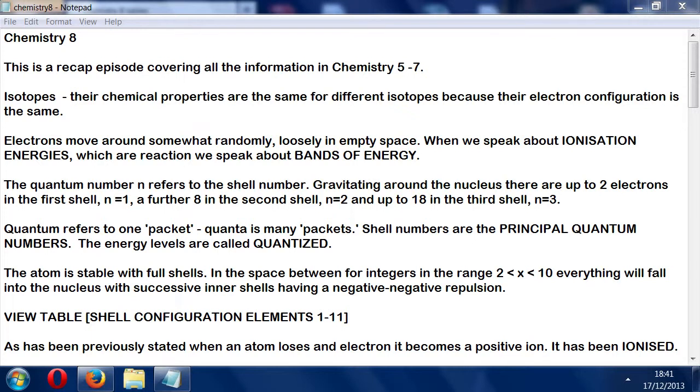I began Episode 5 talking about isotopes. Same proton, electron, and atomic number, but different numbers of neutrons, giving a different mass number. The chemical properties are the same for different isotopes because their electron configuration is the same. Different neutrons don't affect the electron configuration.